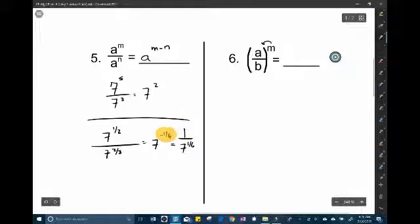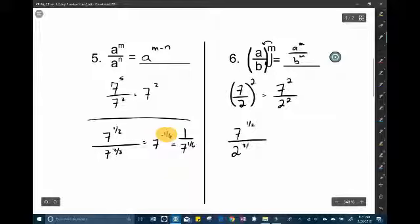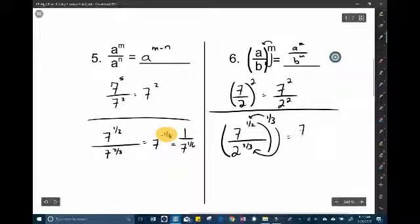And last property I believe is a to the m over b to the m. Just remembering to distribute that exponent to the numerator and to the denominator. So let's say you had 7 over 2 and we raise that to the 2nd power. That would be the same as 7 squared over 2 squared. And again the same thing is going to apply to the 7 over 2 to the 2 thirds. Multiply out to the 1 third and distribute to both. That is going to be 7 to the 1 sixth all over 2 to the 2 ninths. Okay. So all those properties are still going to apply.